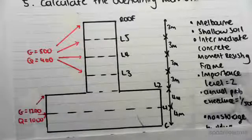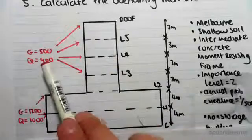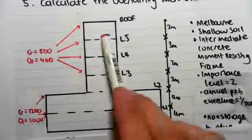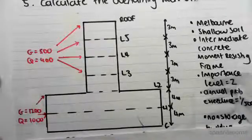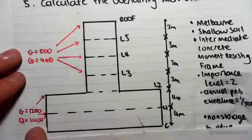The dead load at each of these floors is given as 500 kilonewtons. The live load at each of these floors is given as 400 kilonewtons. Similarly, that floor and that floor has a dead load of 1200 and 1000.